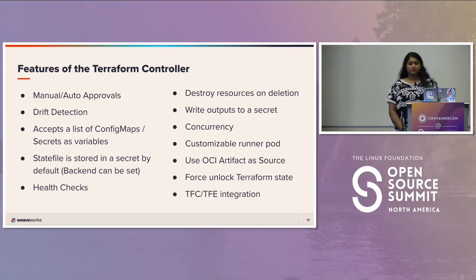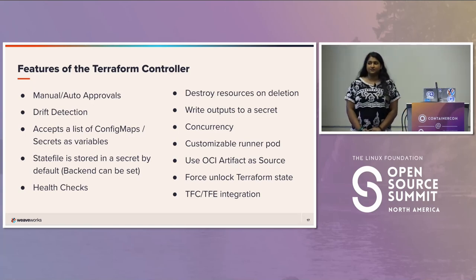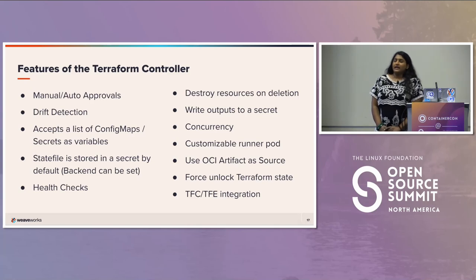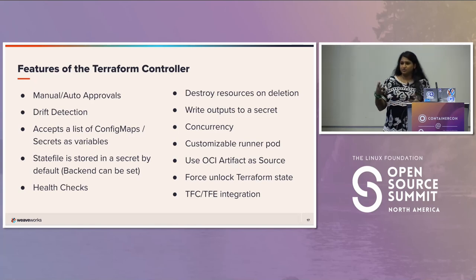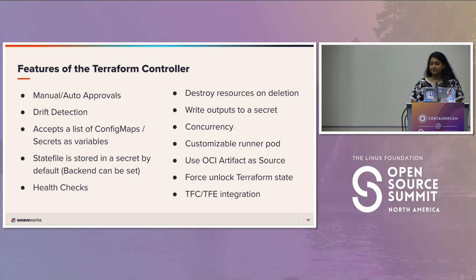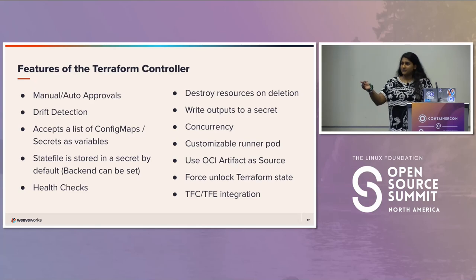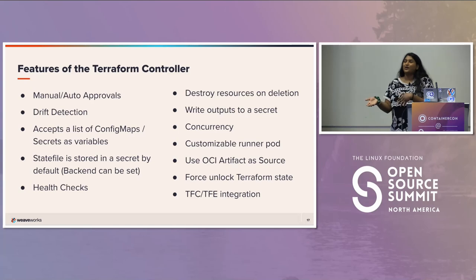You can also destroy resources on deletion — that's not the default. If you're familiar with Flux, it has a flag called prune. If you set prune to true, when you remove a YAML it'll actually also destroy the resource, but that's not the default. You can also write the outputs to a secret and then use it in a second module. If the second one depends on the first, you can output to a secret and then use it as input in the second one.